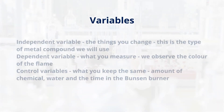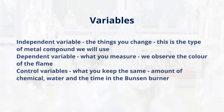Let's think about the variables we have in this practical. We have the independent variable — this is something you can change, and for us it's the metal compounds that we're using. We have the dependent variable, which is what we measure — this is us observing the colour of the flame.